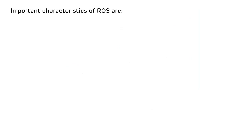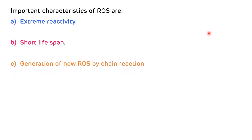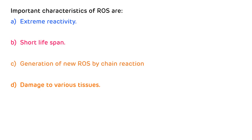Now the characteristics of reactive oxygen species: there are four important characteristics. First, they are extremely reactive. Second, they have a short life span. Third, they generate new reactive oxygen species by chain reaction. Fourth, they cause damage to various tissues. These are the four important characteristics of reactive oxygen species.